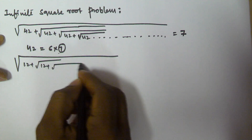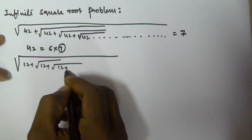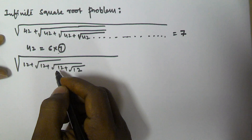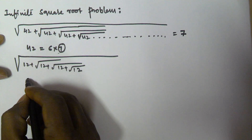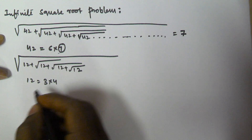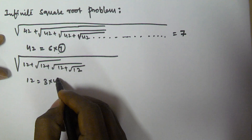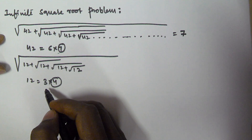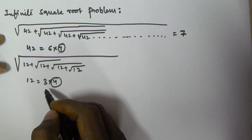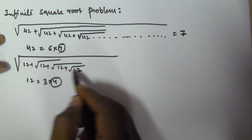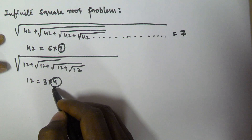In the same manner, for under root of 12 plus under root of 12 plus under root of 12 and so on, what is the answer? The number 12 can be written as 3 times 4, so the answer for this infinite square root problem is 4.